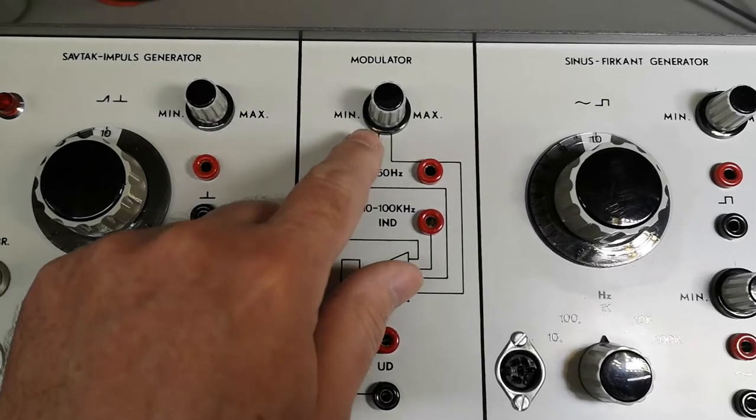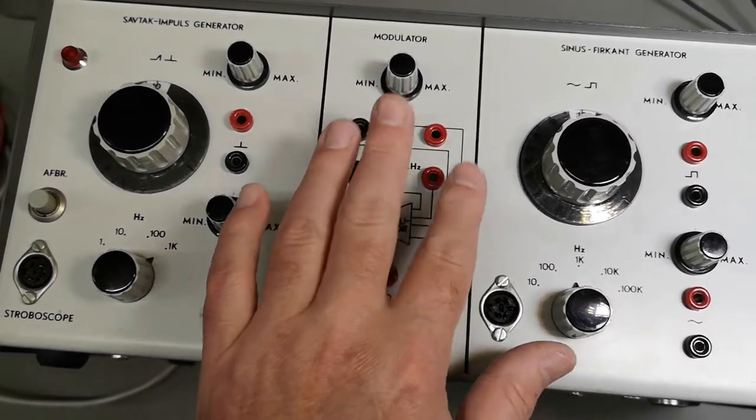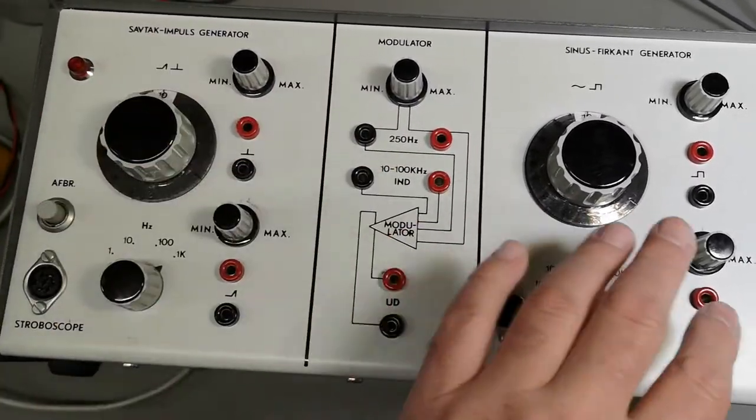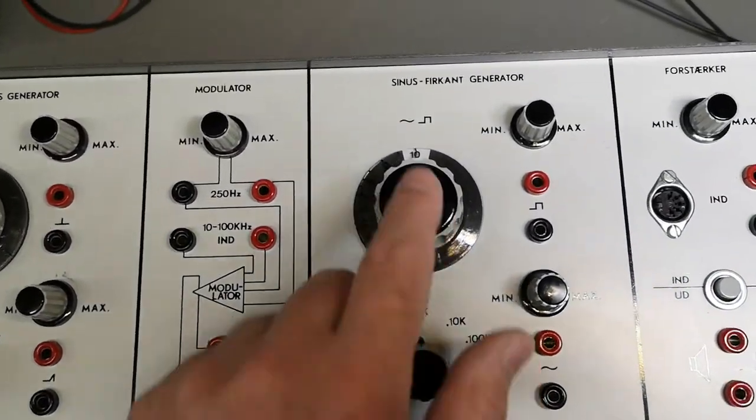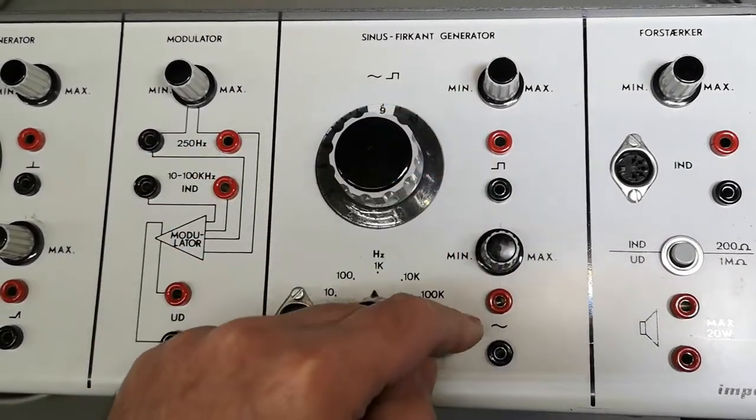Maybe you can connect those two inputs from the two different generators. Because this is a sine wave and a square wave generator with two outputs. I guess they will be on at the same time with two different levels, and of course this is the frequency.